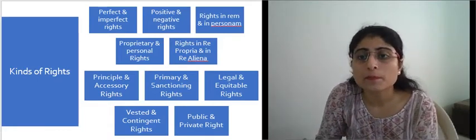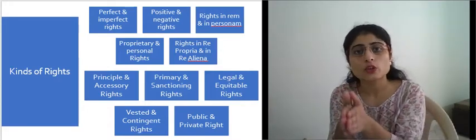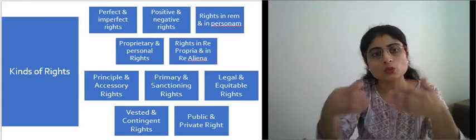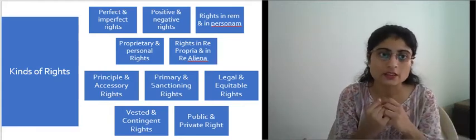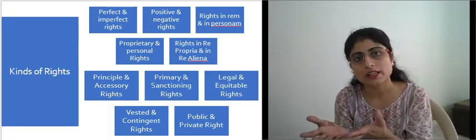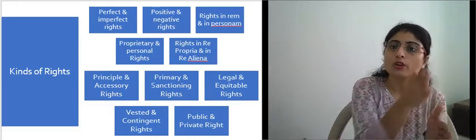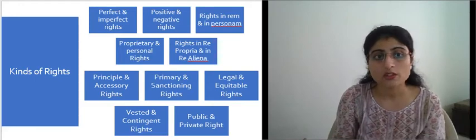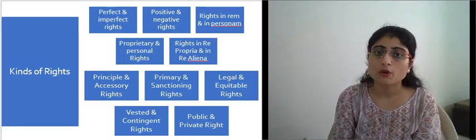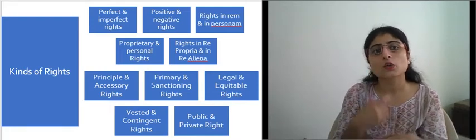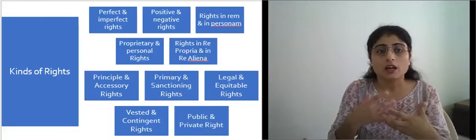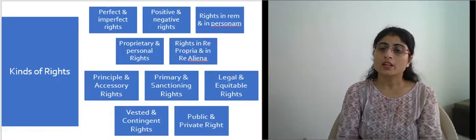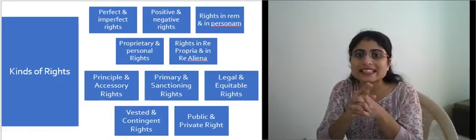The next kind is proprietary and personal rights. Personal rights relate to the person of the owner, while proprietary rights relate to property. Proprietary rights constitute a person's property or wealth — rights that possess some economic or monetary value. Rights without such monetary value are personal rights, which include the right to reputation and the right to safety. Proprietary rights include the right to possess property of monetary value.